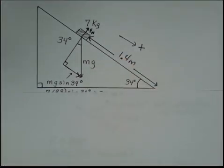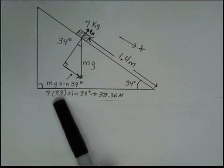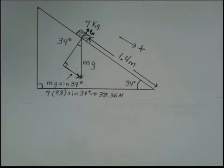A little work with right triangles, but there we are. So the force going down the plane, mg is 7 times 9.8, mass of the object multiplied by the acceleration due to gravity, and then sine of 34 degrees. Put that into your calculator and hopefully you'll get 38.36 Newtons. Make sure your calculator is in degree mode.